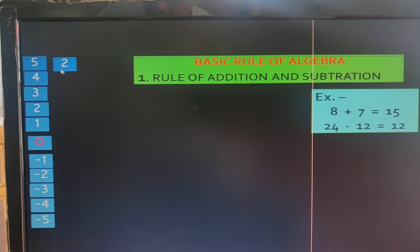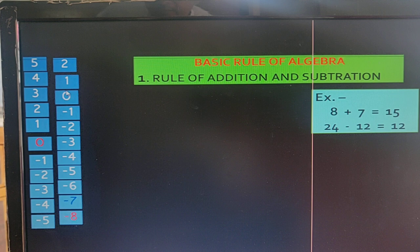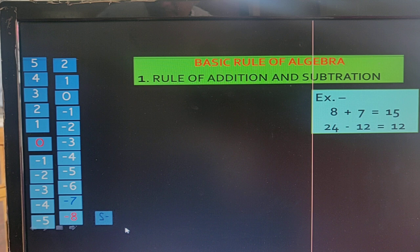If 2 is on the top in the number line, then we can write the lower terms: 1, 0, minus 1, minus 2, etc.